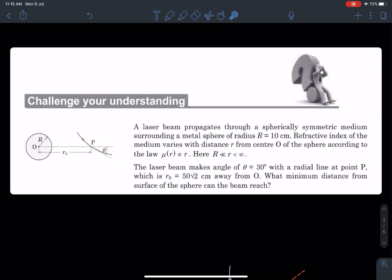From O at a distance of r₀ there is a point P. This dotted line is the radial line and the incident light ray is making angle θ. It is entering at some angle and will follow some curvature. The question is: what minimum distance from the surface of the sphere can the beam reach?